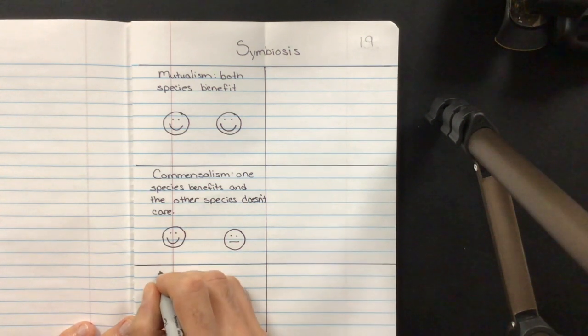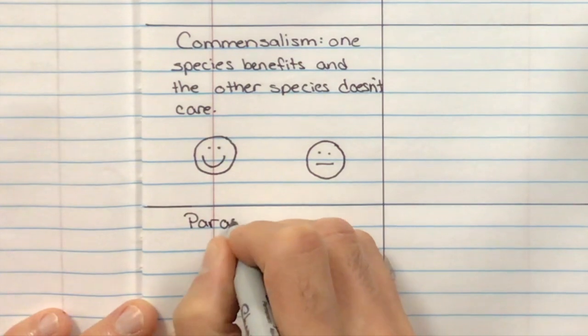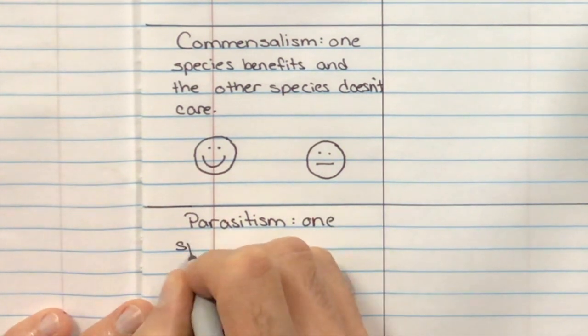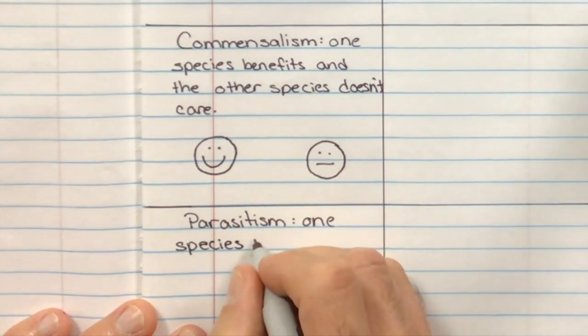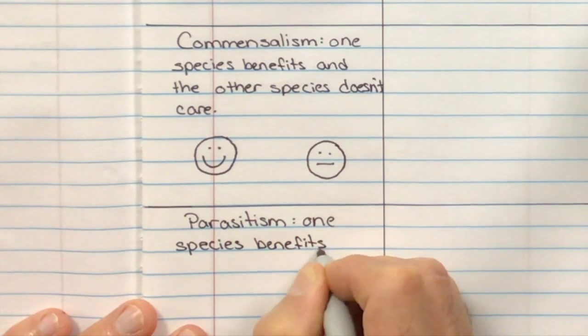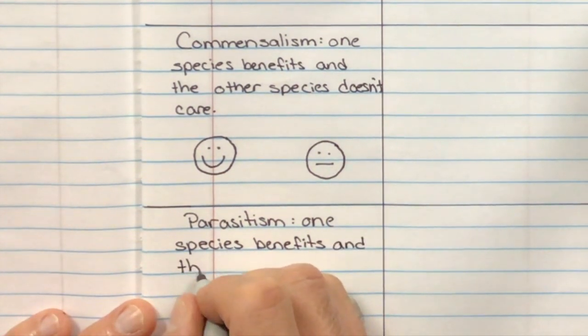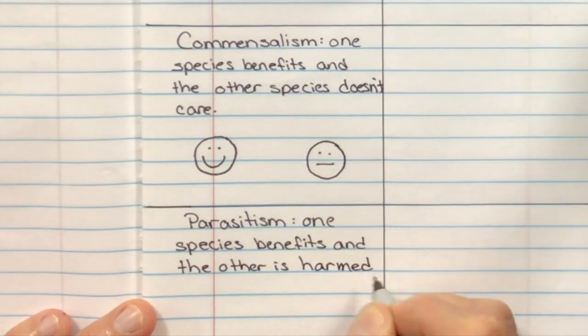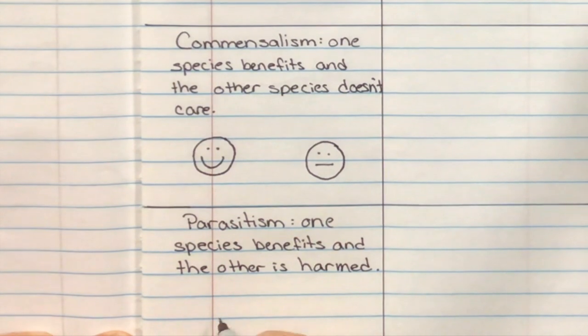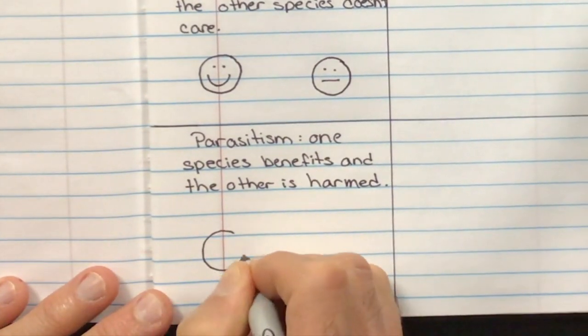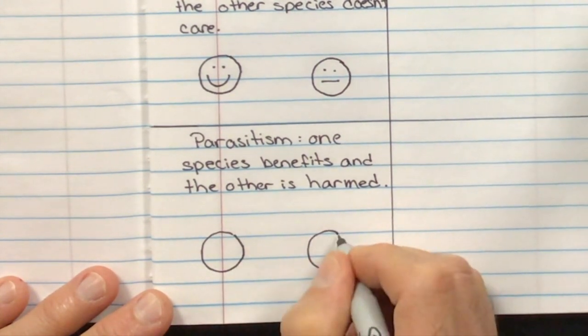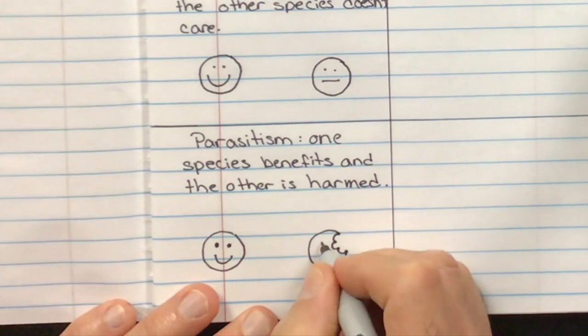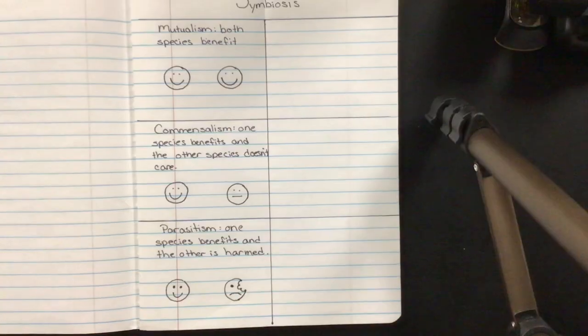The last type is parasitism. Parasitism has the word parasite, as you can hear in it. I feel like it's the one that most kids know about. This is where one species benefits and the other is hurt or harmed. So in this case, as you can imagine, we're going to go ahead and draw a happy face down here. And then we're going to draw a sad face. But he's going to have a chunk taken out of him. So here we have our happy face. Yay, I'm benefiting. And this guy is missing an eye. And he's sad because he got a bite taken out of him.